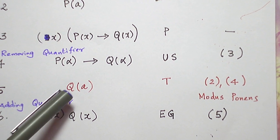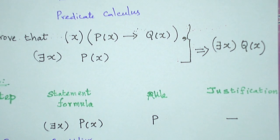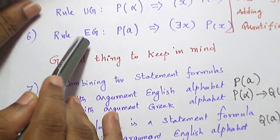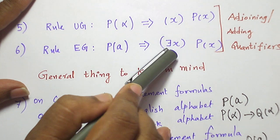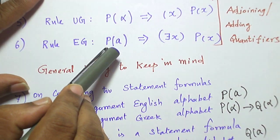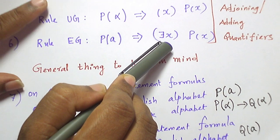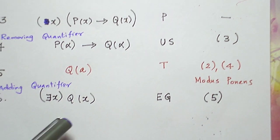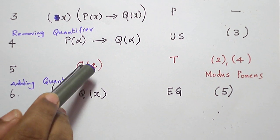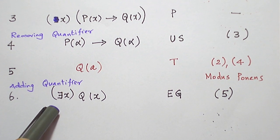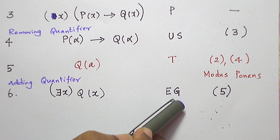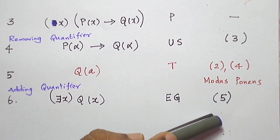Now the conclusion needs a quantifier. I will replace the English alphabet 'a' with x and adjoin a quantifier using Rule EG. Whenever we have an English alphabet, we can adjoin an existential quantifier; whenever we have a Greek letter, we can adjoin a universal quantifier. So Q(a) becomes there exists x such that Q(x). This step is done by Rule EG — existential generalization — applied to the statement in step 5.